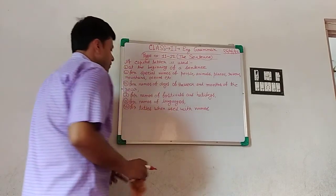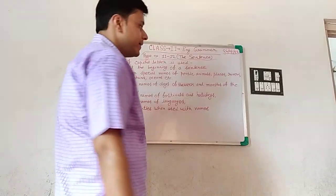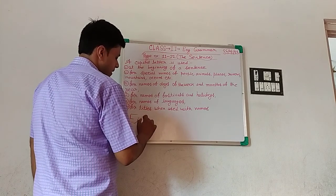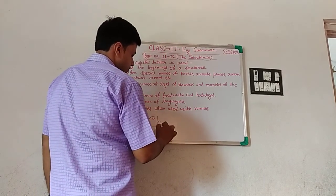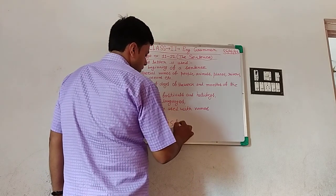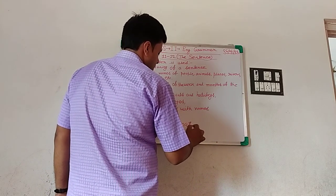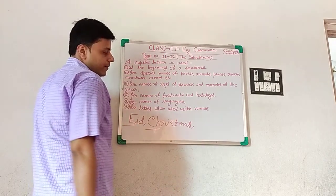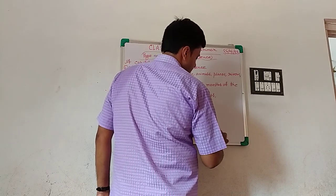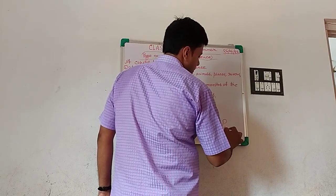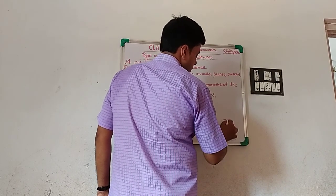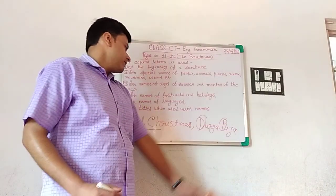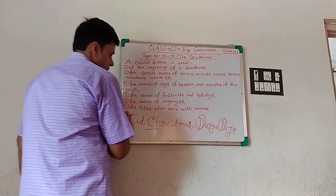The fourth rule: capital letters are used for the names of festivals and holidays. For example, Christmas — 'C' is capital. Durga Puja — 'D' is capital. These are names of festivals, so we always use capital letters for festival names.